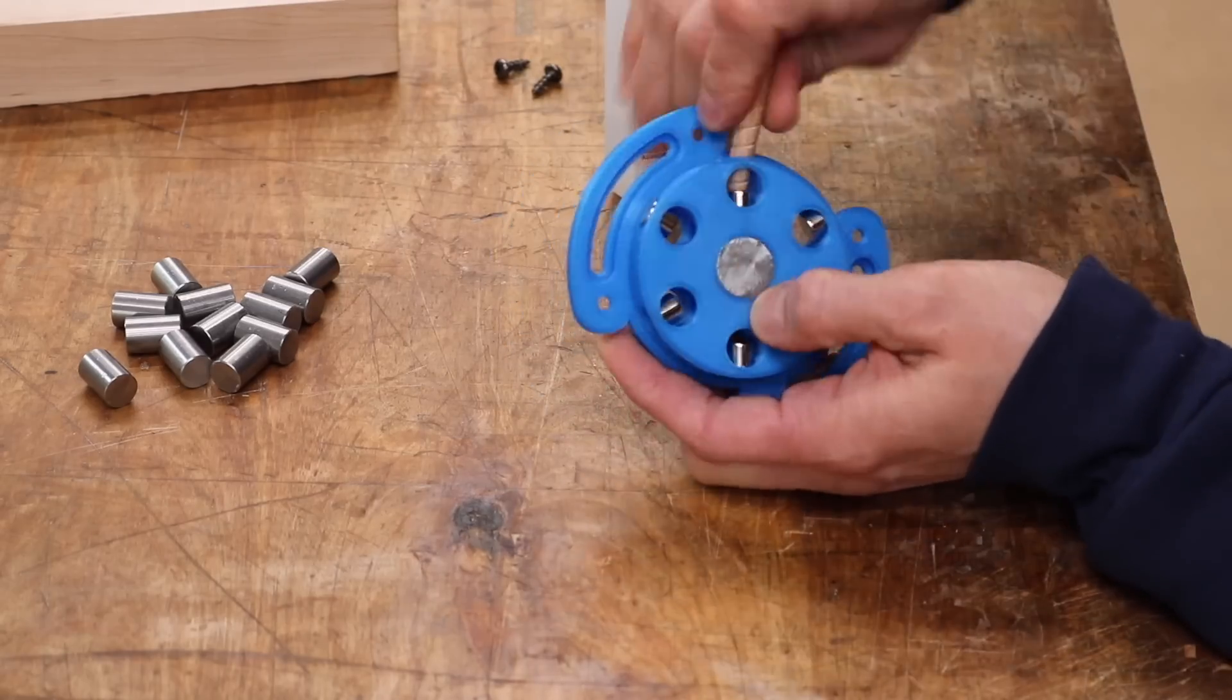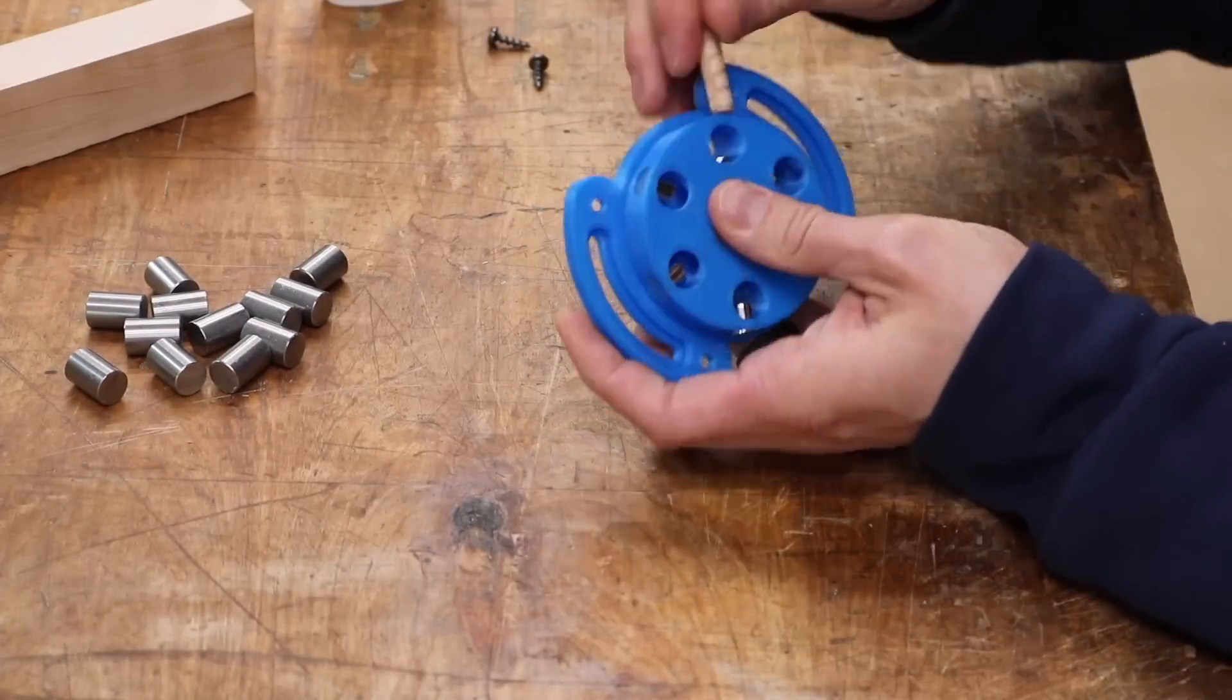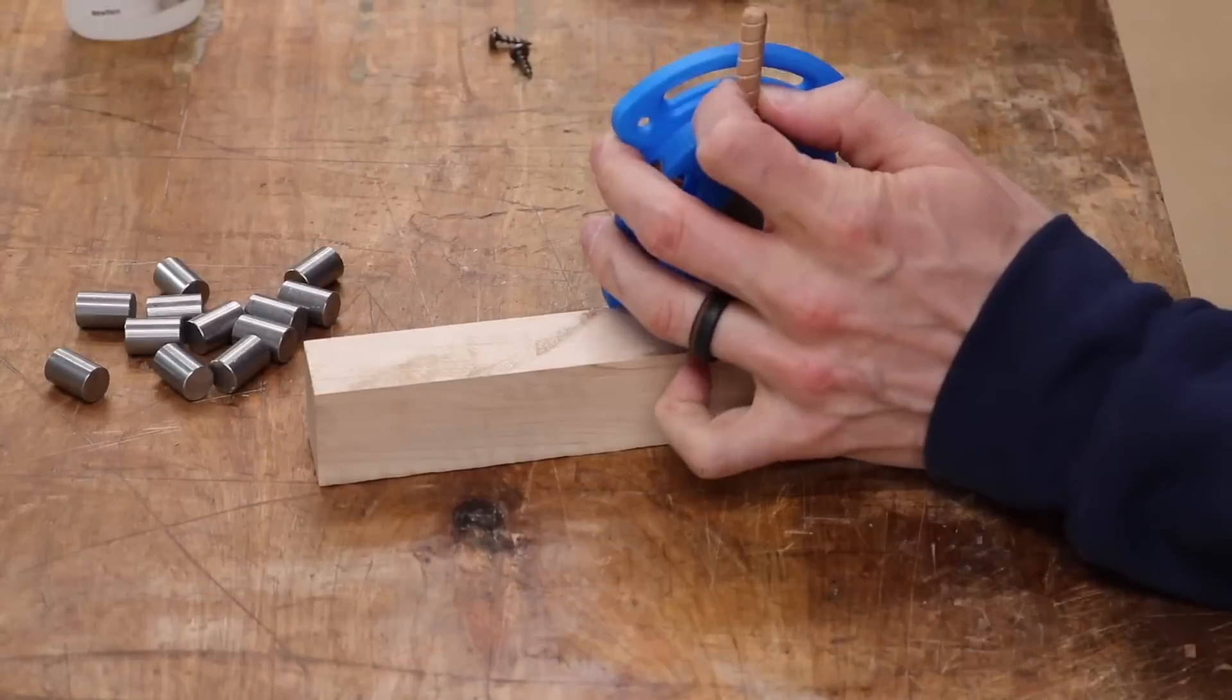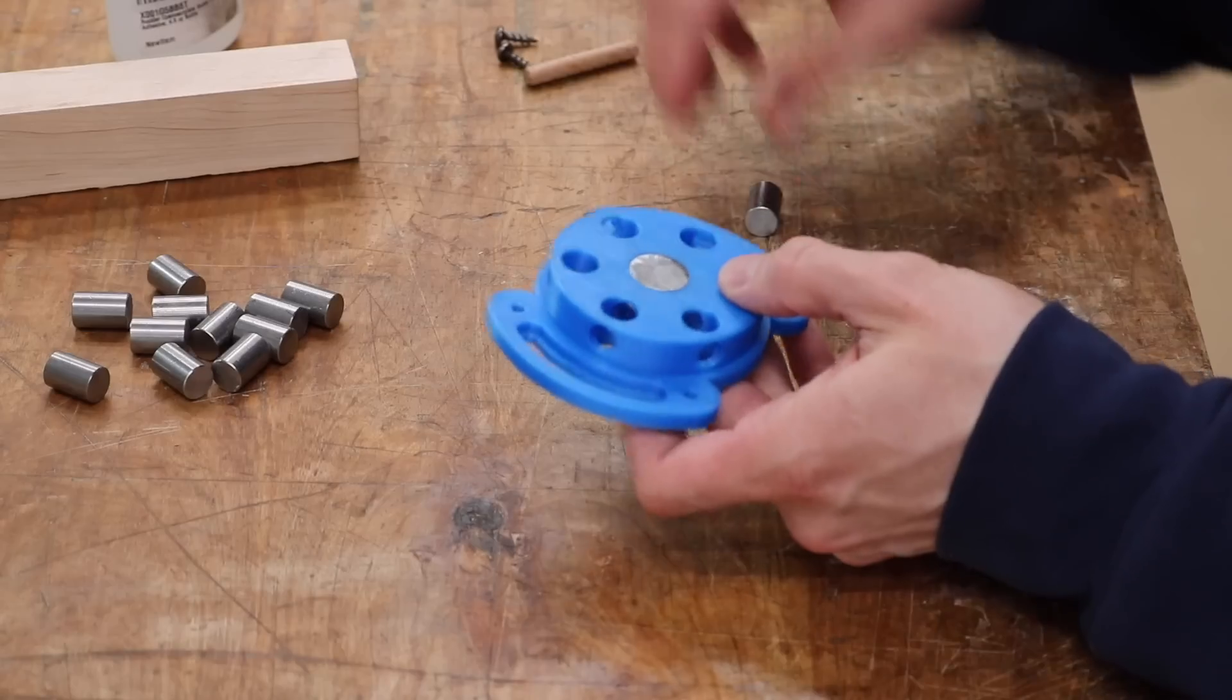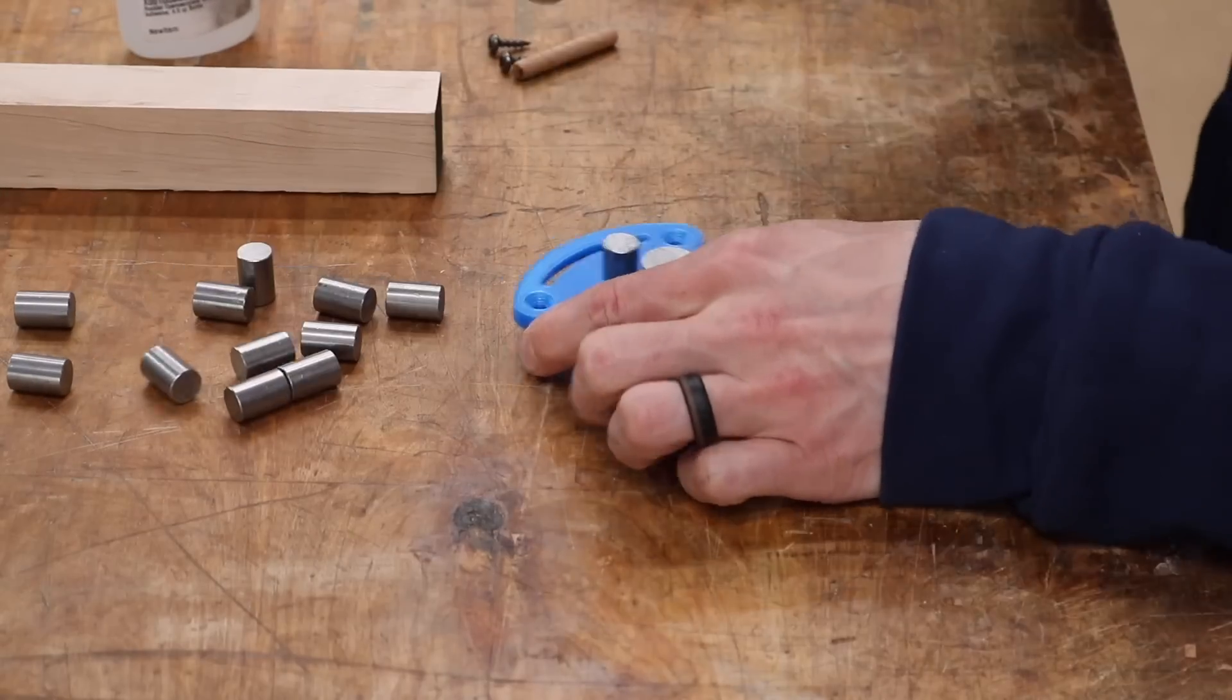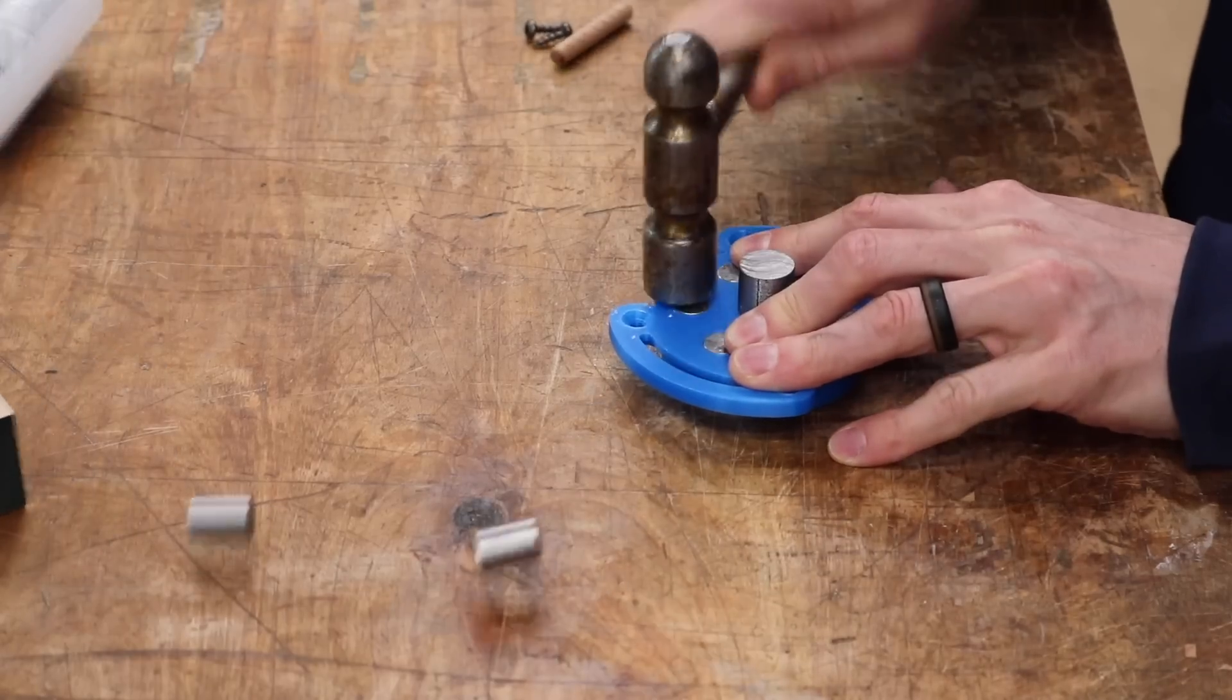And then I just use some CA glue and push the magnets into place against the center post. And then I pound in six of the half inch steel rods all around the center. And the base is done.